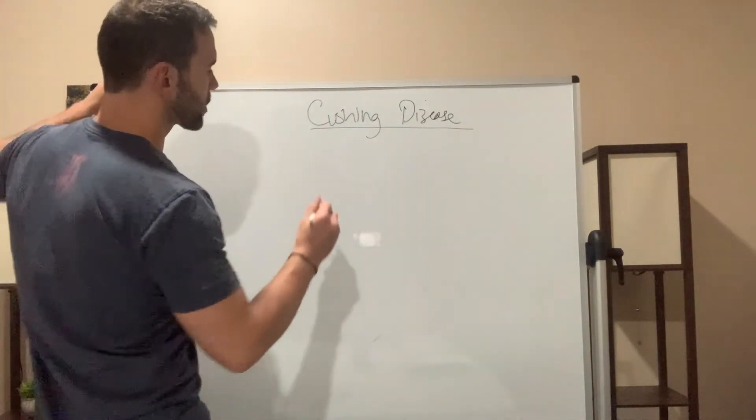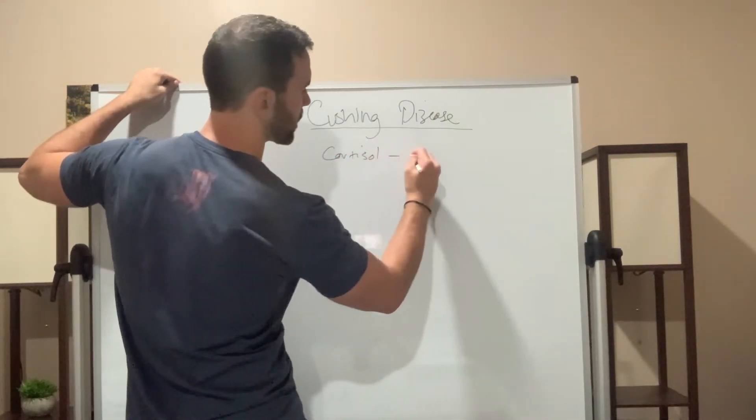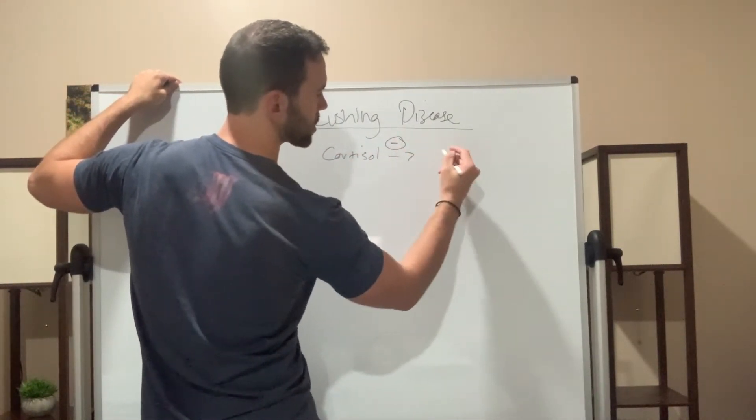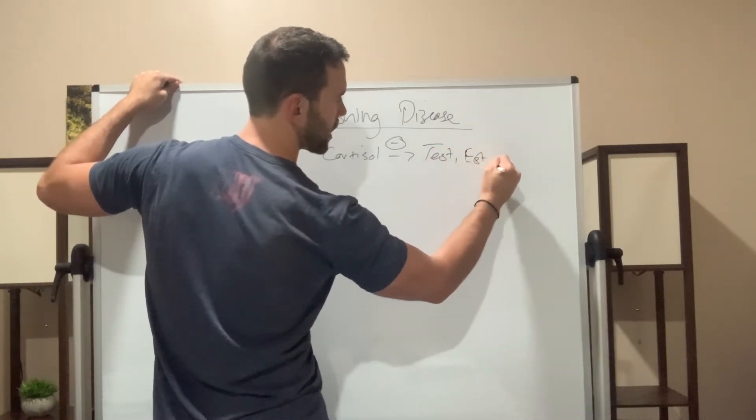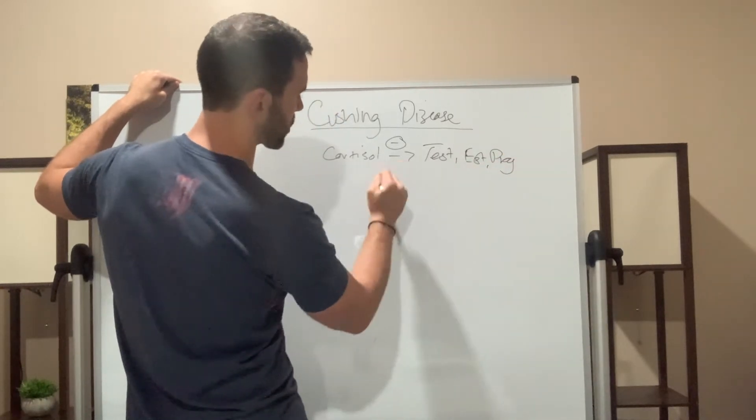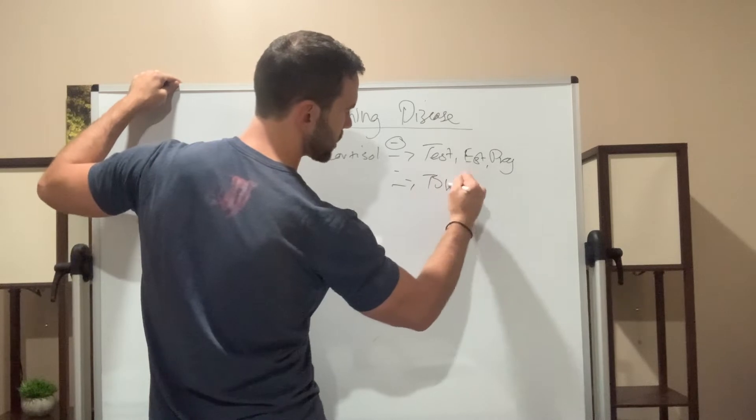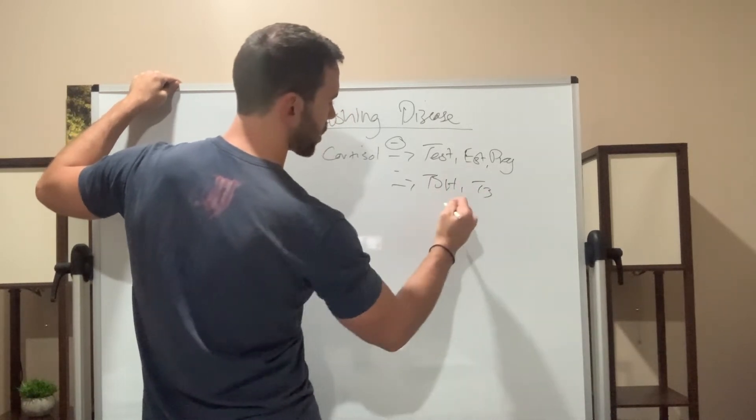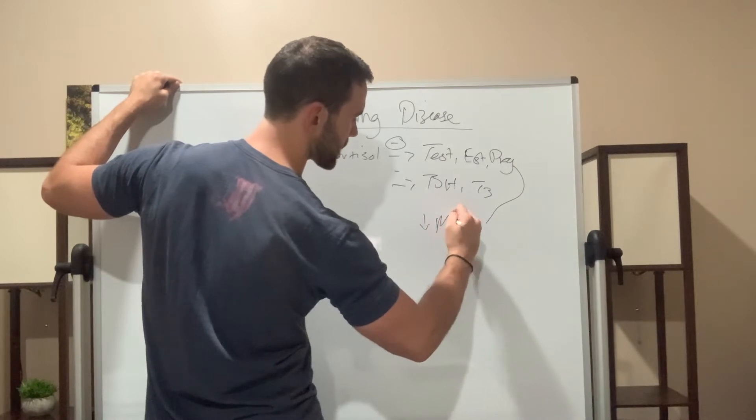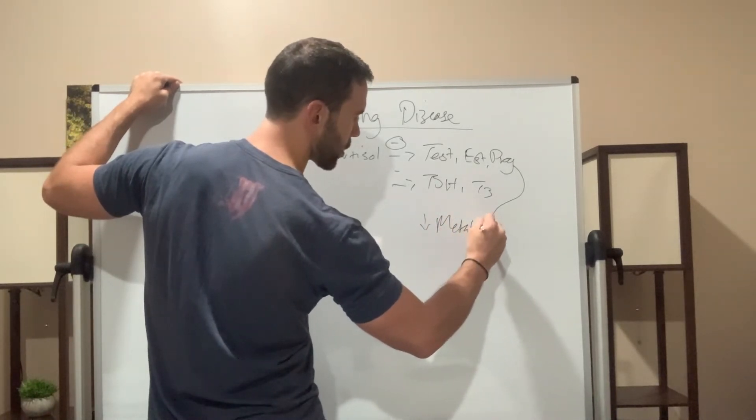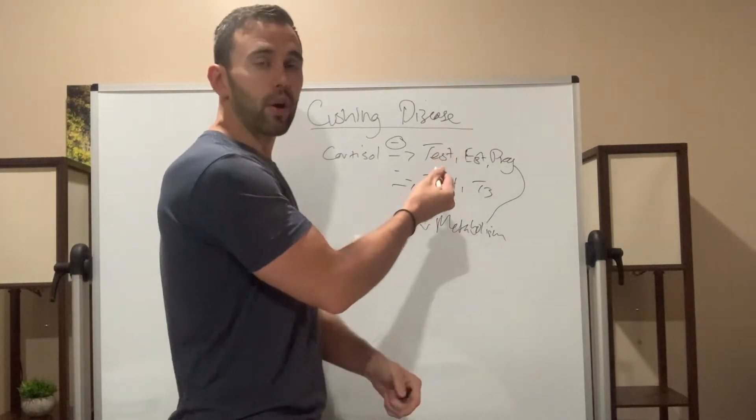Cortisol will actually inhibit your testosterone, your estrogen, and your progesterone. So, it inhibits your sex hormones, but it also inhibits your TSH and your T3. So, what does all of this do? This all leads to a decreased metabolism. So, you wonder why you're having trouble losing weight. This is a big part of it.